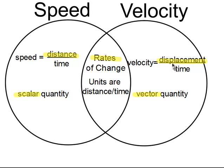Our units for both of them, for the numerical value, will be distance over time. So kilometers per hour, meters per second, miles per hour. Those are all examples of units for speed and velocity.